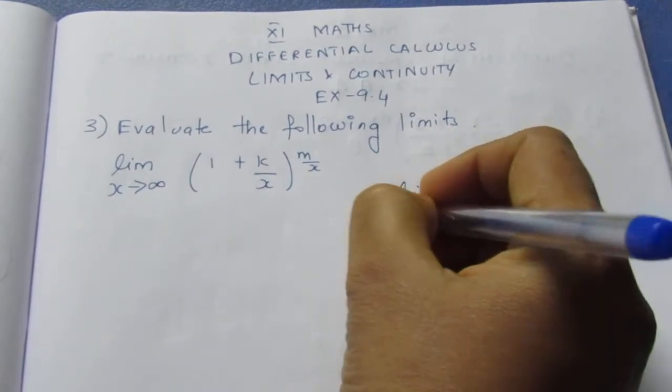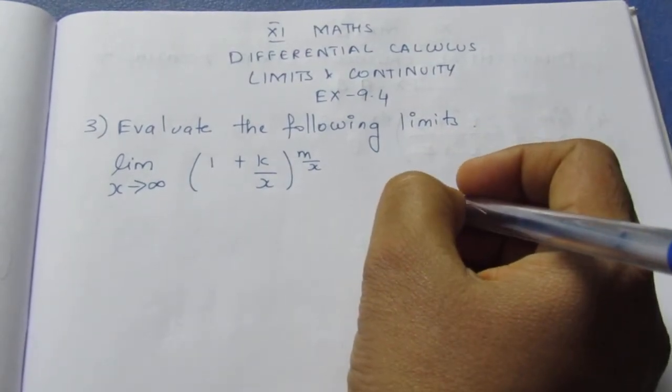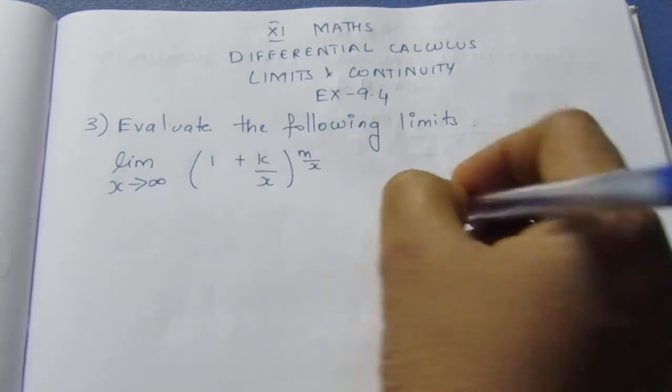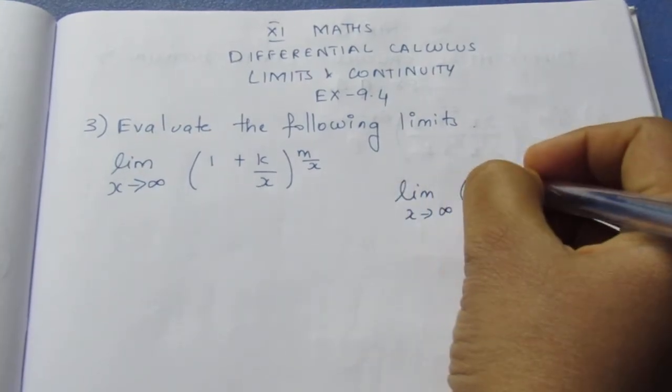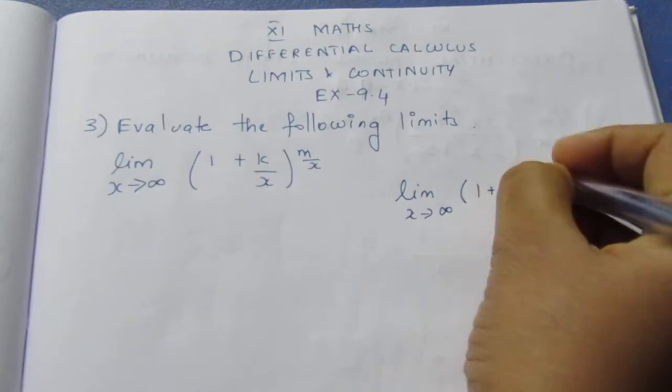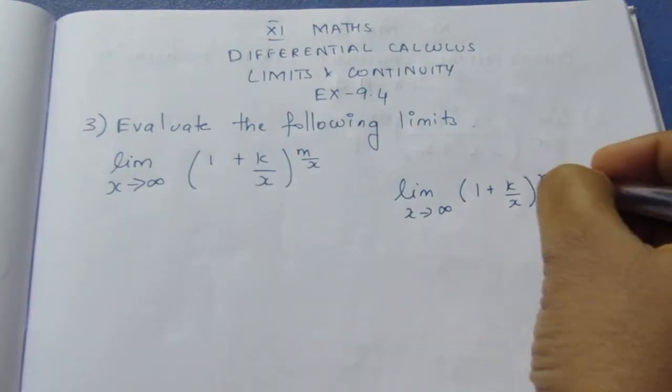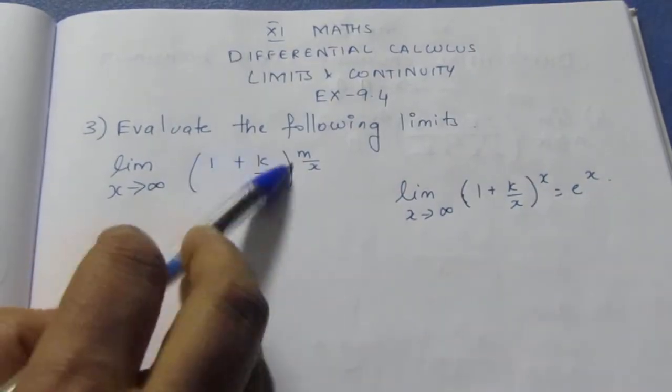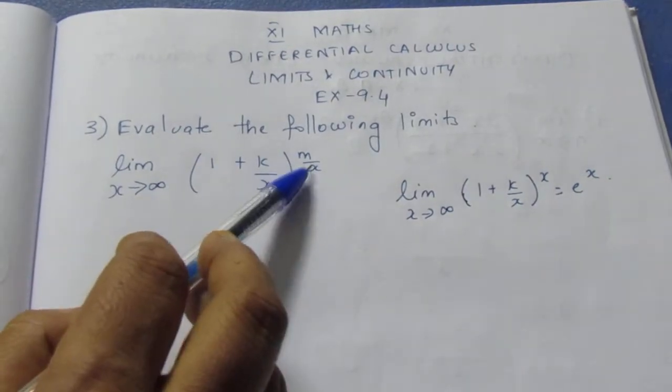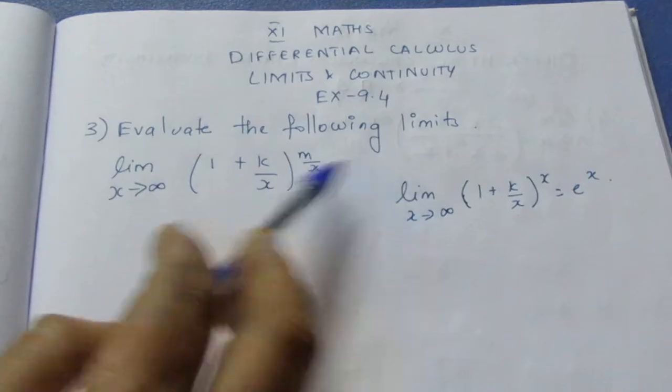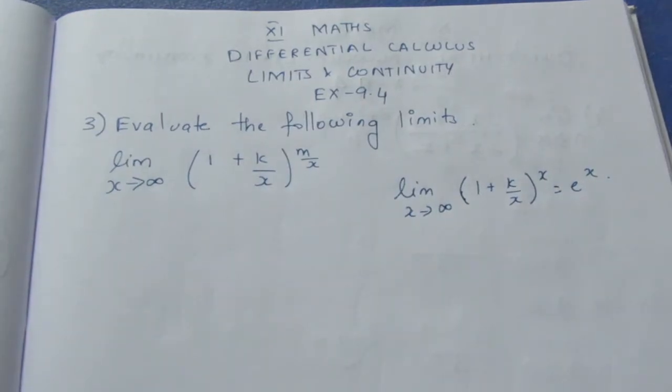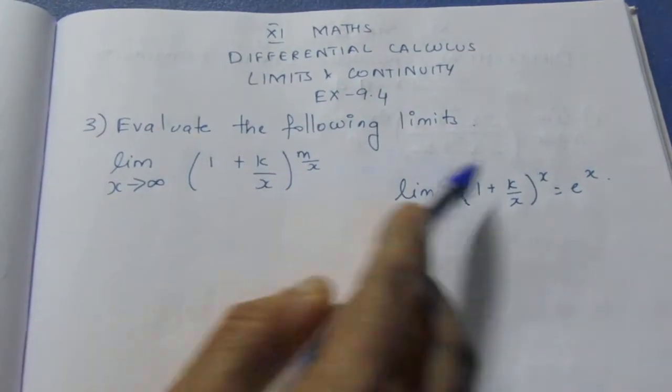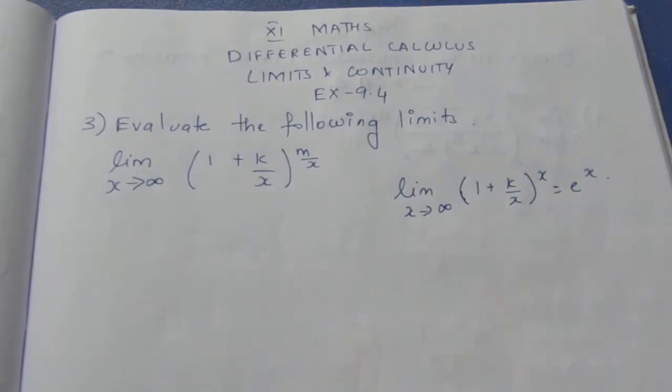Limit as x tends to infinity of (1 + k/x) to the power x, which is equal to e to the power k. We will substitute this formula.